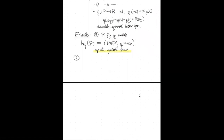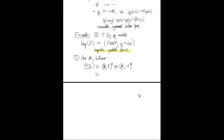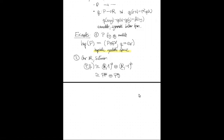Over ℝ, we have Sylvester's theorem, which tells us that any unimodular symmetric bilinear form is isomorphic to a copies of ℝ with bilinear form 1, plus b copies with bilinear form −1. The theorem says the numbers a and b are invariants of the form — the positive and negative parts — and their difference is usually called the signature.